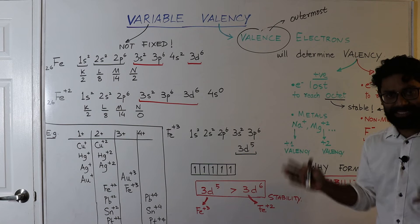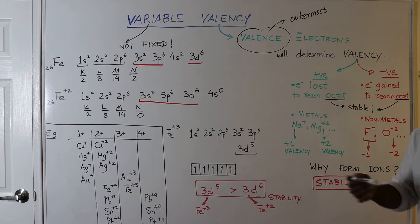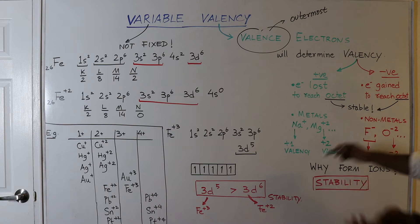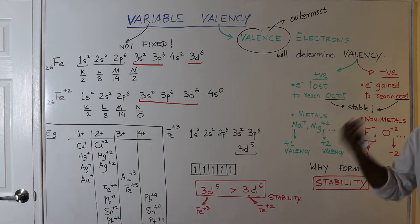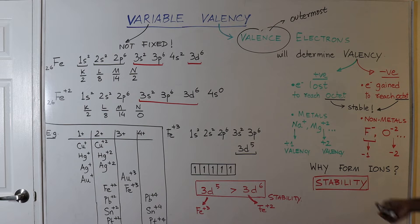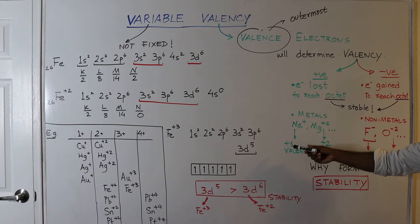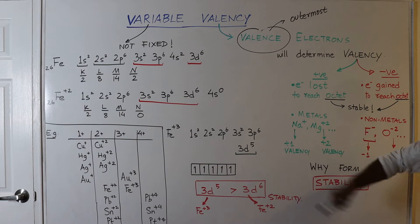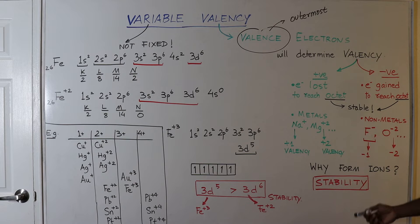Now why are these atoms of elements forming these ions? Some are forming positive while some are forming negative. But why are they doing this? The simple answer is stability. Whatever happens in chemistry is because of stability. It's all because of stability.